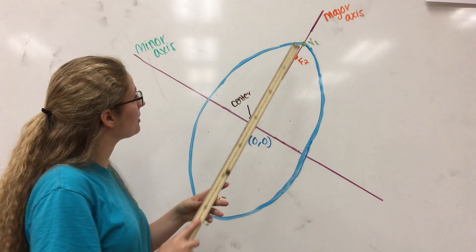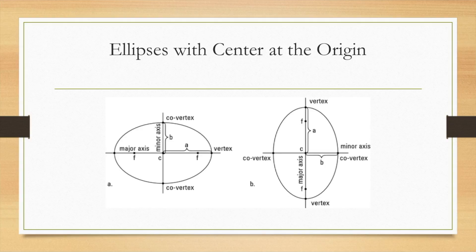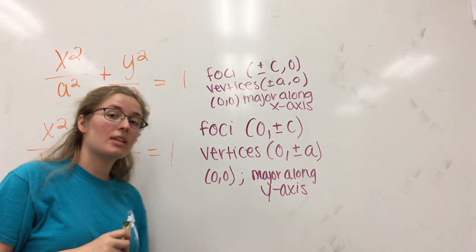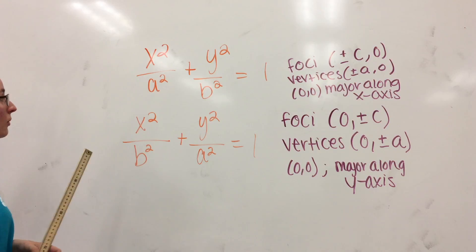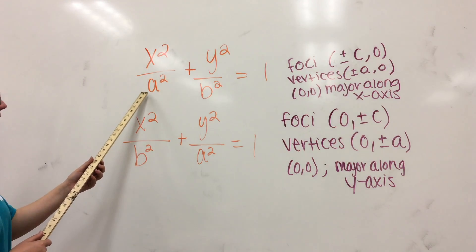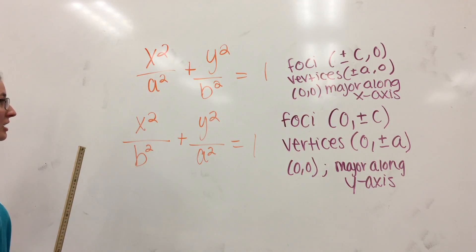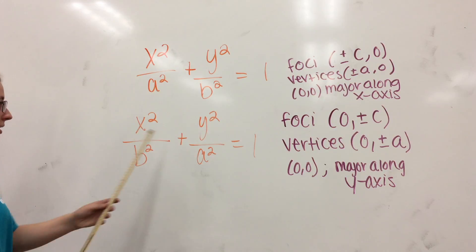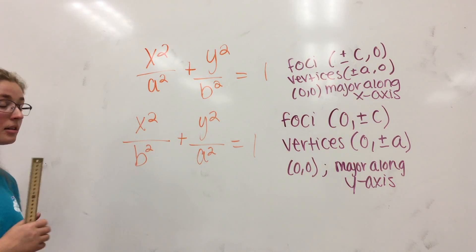Here we have two ellipses with the center at the origin. The ellipse on the left has the major axis as the x-axis, and the ellipse on the right has the y-axis being the major axis. On both of these ellipses, a is the distance from the center to one of the vertices, and c is the distance from the center to one of the foci. These two ellipses have very similar but different equations. One way you can distinguish between them is by looking at the a-squared variable. a-squared will always be the larger number. If a-squared is under the x-squared variable, the major axis is along the x-axis. If a-squared is under the y-variable, the major axis is along the y-axis.